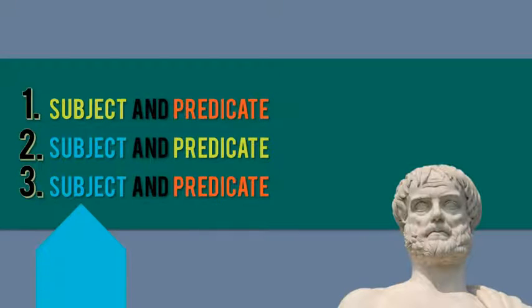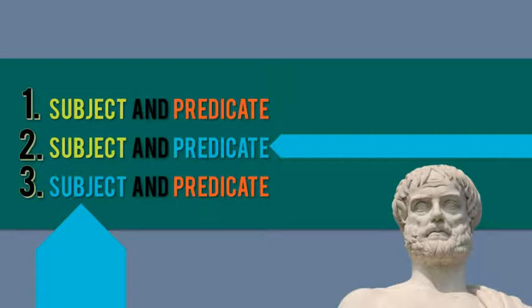The confusing part is, well, for example, the subject of the conclusion may not be the subject of the second sentence, the minor premise. It could be the predicate or the other way around.